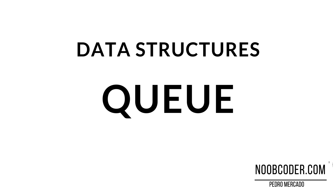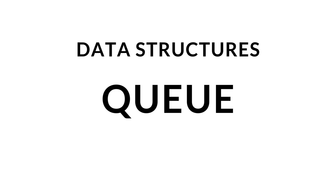Hey, what's up guys? It's Pedro here from Noobcoder.com. And in this tutorial, we are going to be talking about queues. A queue is a linear data structure that can be implemented using an array or a linked list. Within this video, we'll be going over how to implement a queue using an array.